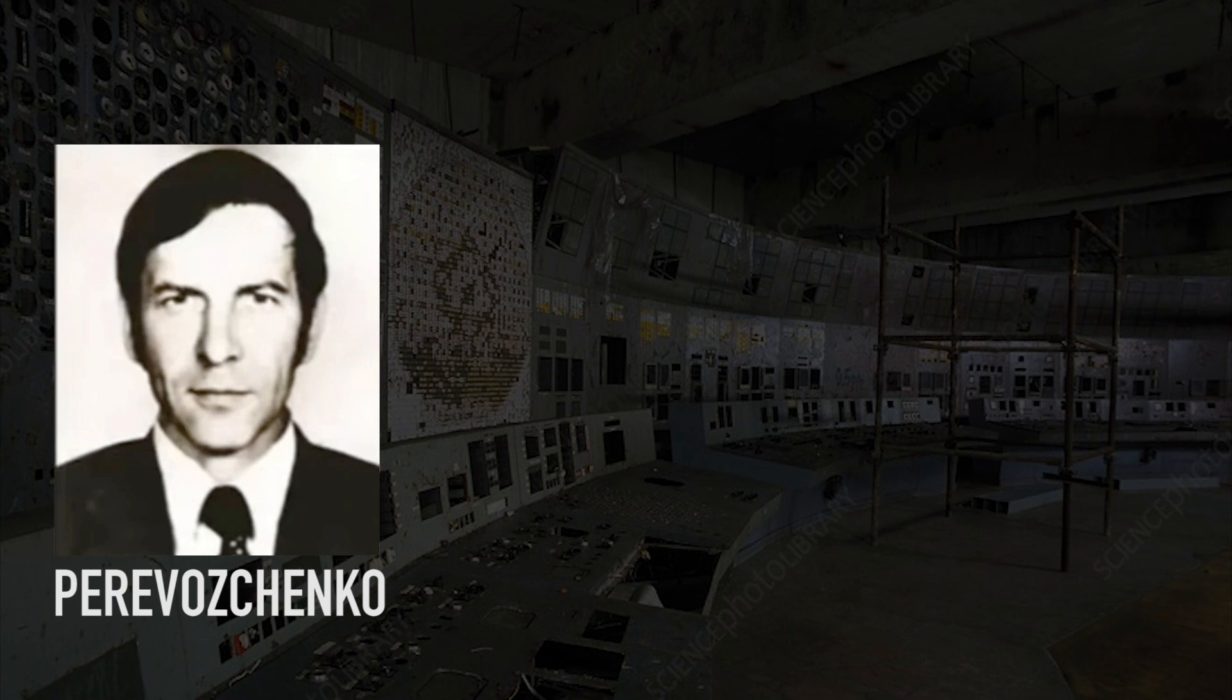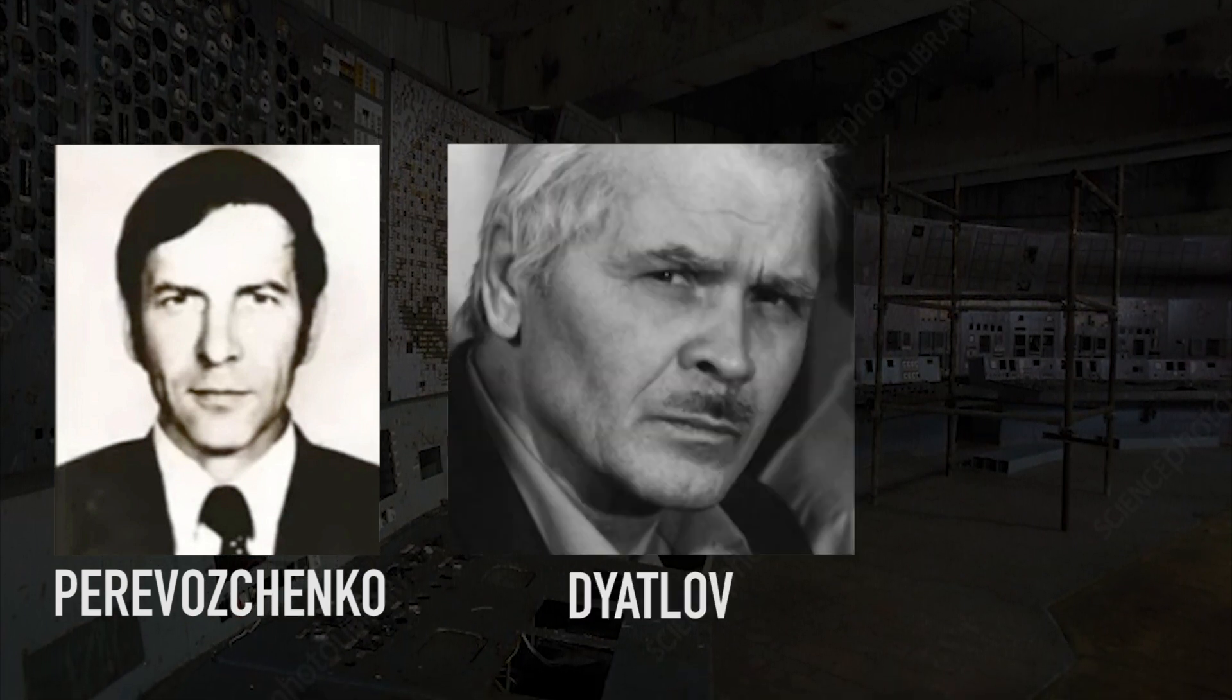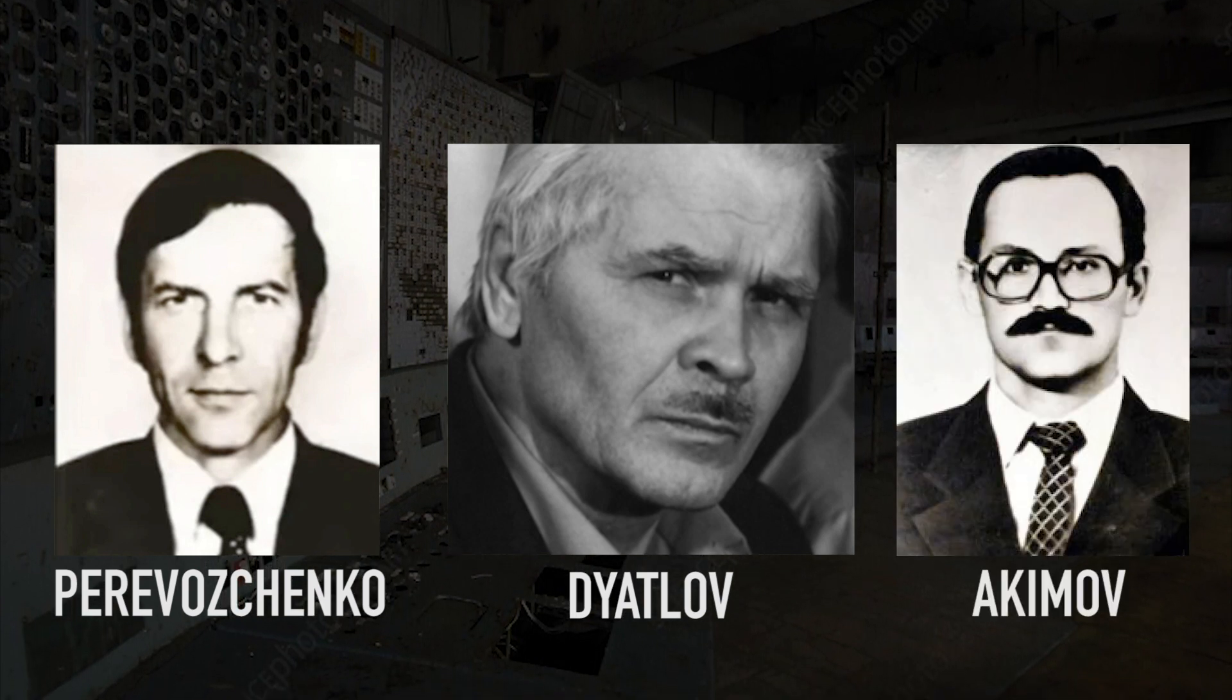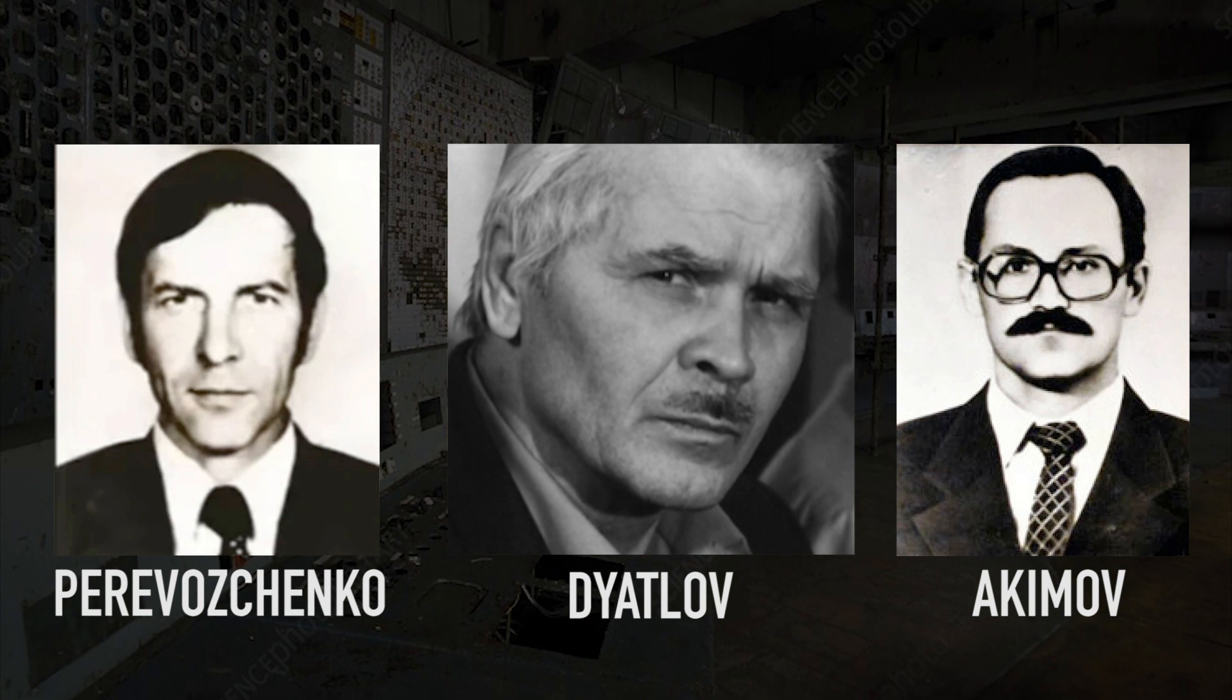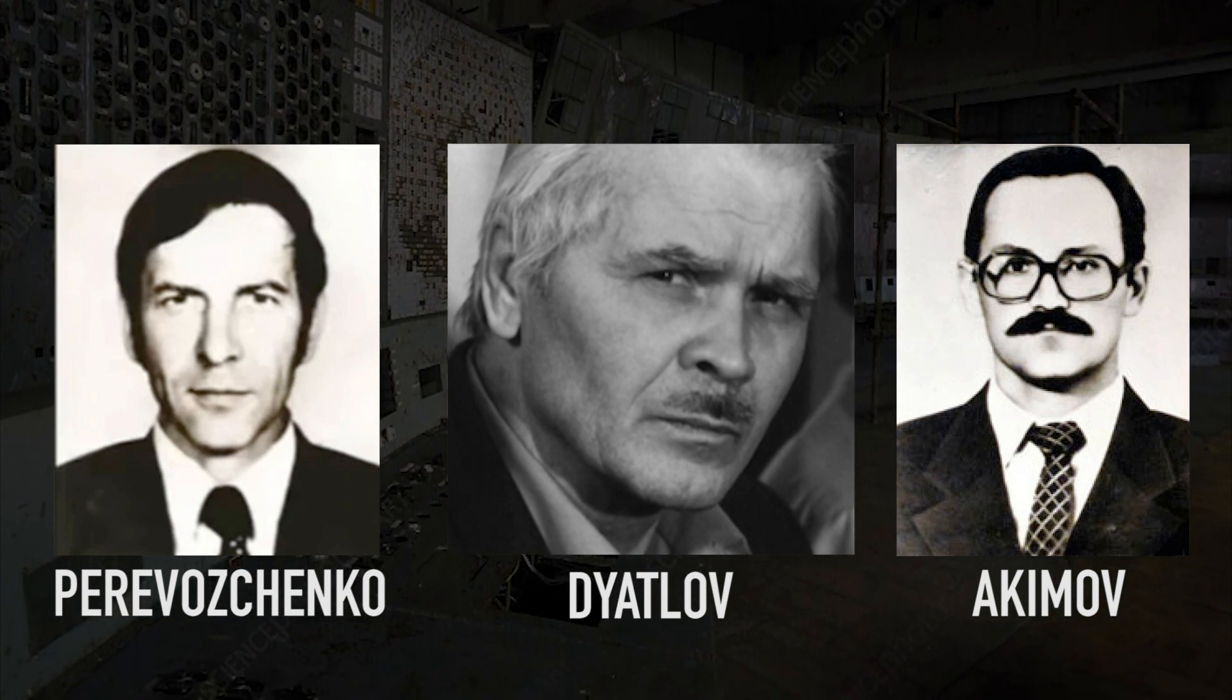Shortly after the explosion, Valery Perevozchenko arrives at the control room. He reports his findings to Dyatlov, but Dyatlov doesn't believe that the core is destroyed. Akimov also has trouble believing that the reactor is destroyed. After all, they have been told that RBMK reactors cannot explode.